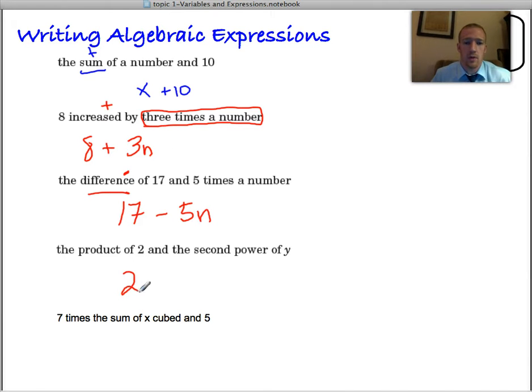The product of 2 and the second power of y. So that's going to be a y squared. So the product. So that means 2 times y squared. 7 times the sum of x cubed and 5. So it's 7 times something. 7 times this. Alright. So it matters how you group things. This is going to be 7 times the sum of x plus 5. Now wait. It's not written like this. It's x plus 5 grouped together. Then 7 times that.